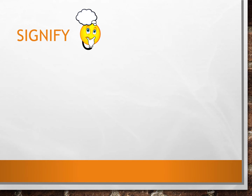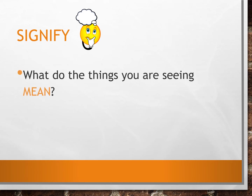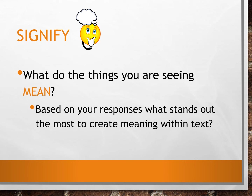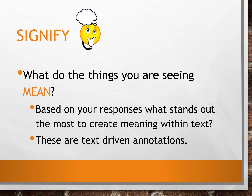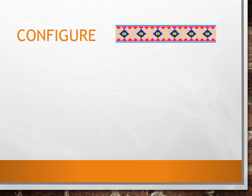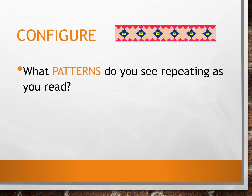Step two is to signify. This is where you take your notices and decide what significance each one has. You're looking at what your notices actually mean — consider what stands out the most to create meaning within the text. This is where you start commenting on your notices: once you've highlighted things, go back and say what you think about each one, writing a couple of comments to remember what you're thinking as you read.